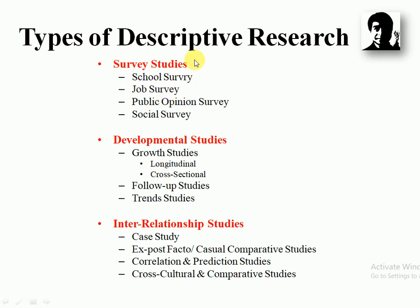There are three types of descriptive research: survey studies, developmental studies, and inter-relationship studies. Survey studies include school survey, job survey, public opinion survey, and social survey. Developmental studies include two types: longitudinal research and cross-sectional research, as well as follow-up studies and trend studies.